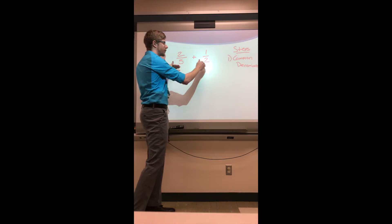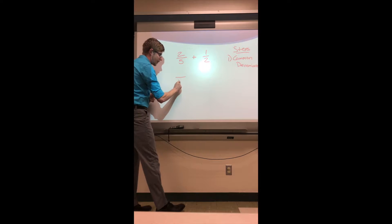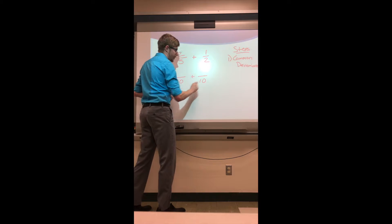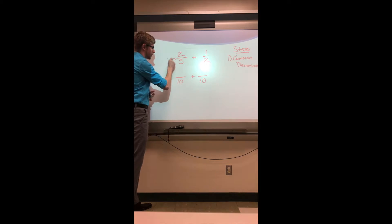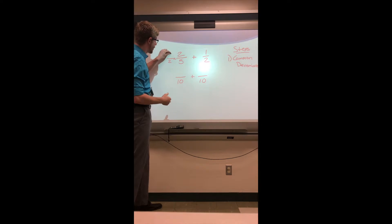So I think to myself, five and two, what can I get those to? And the answer to that is ten. I can turn both of these fractions into denominators of ten. So for the first one, I would need to multiply it by two. Well, whatever I do to my denominator I also have to do to my numerator.